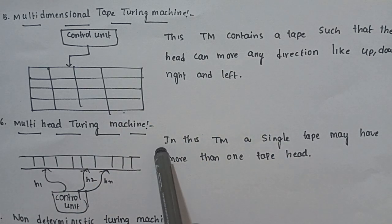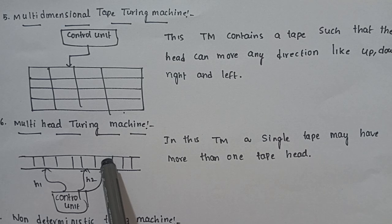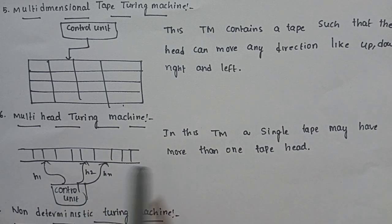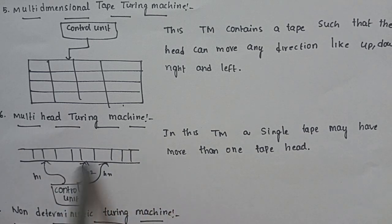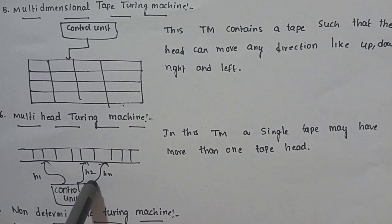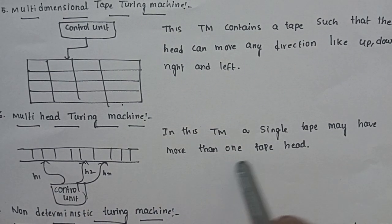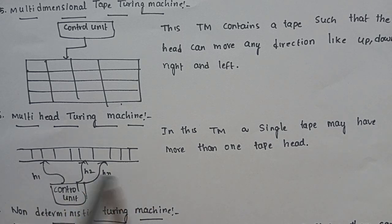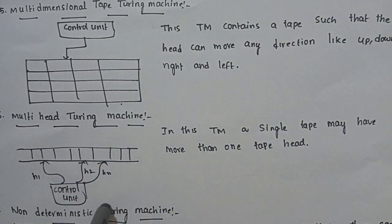The next variant is the Multi-Headed Turing Machine. In this machine, it is a single tape — one tape has more than one head. In general, there is a control unit and the head performs read and write operations. Here, there are multiple heads on a single tape. In this Turing Machine, a single tape may have more than one tape head — one tape with two or more heads performing read or write operations. That is the Multi-Headed Turing Machine, with the control unit managing n number of heads.